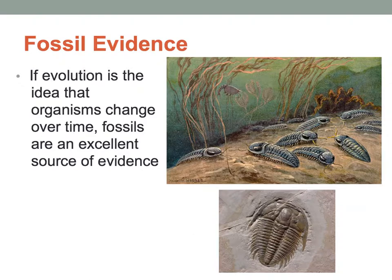Fossil evidence — the fossil record is simply an index of all the fossils ever found on Earth. You can see how organisms have changed over time, and you'll see this in a lab. It shows you how an organism could have changed over time in Earth's history. Fossils are used to support the idea of how a species could have evolved over time.